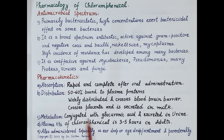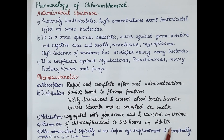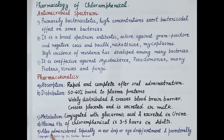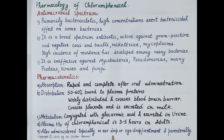Chloramphenicol is metabolized in the liver by conjugation with glucuronic acid, and then excreted in the urine. The plasma half-life in adults is 3 to 5 hours. In addition to oral use, it is also administered topically as ear drops, eye drops, eye ointment, and parenterally.